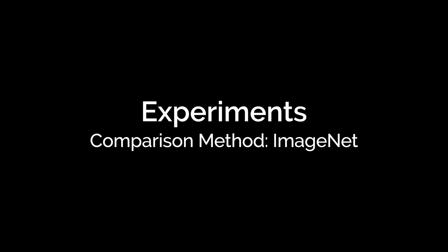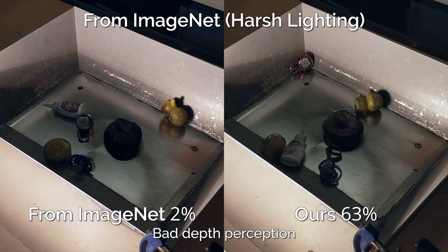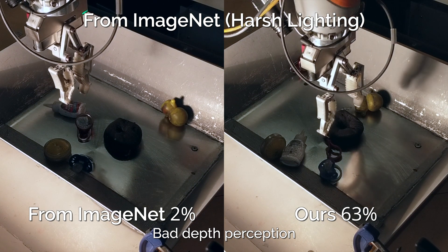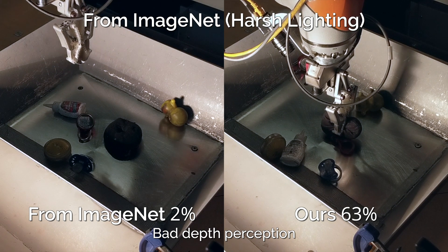Next, we consider a stronger baseline in which we initialize our target Q function using parameters from a classification network trained on the popular ImageNet dataset, instead of those from the base Q function. We leave the rest of the fine-tuning procedure unchanged. You can see in this example from the harsh lighting variation that this method does better than training from scratch by learning visual servoing and to grasp at objects.